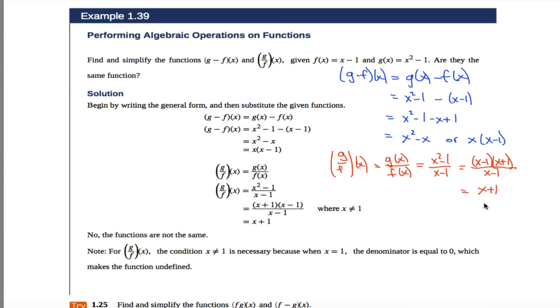I think they will have different domains as well because the domain up here, x can be anything it wants because the domain of g of x is everything from negative infinity to infinity, similar with f of x. But down here, I have to be careful. x cannot be equal to 1.